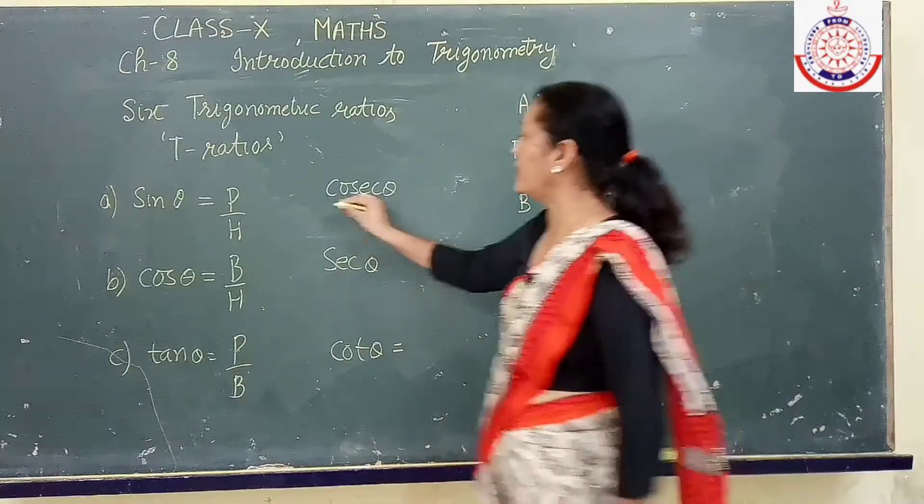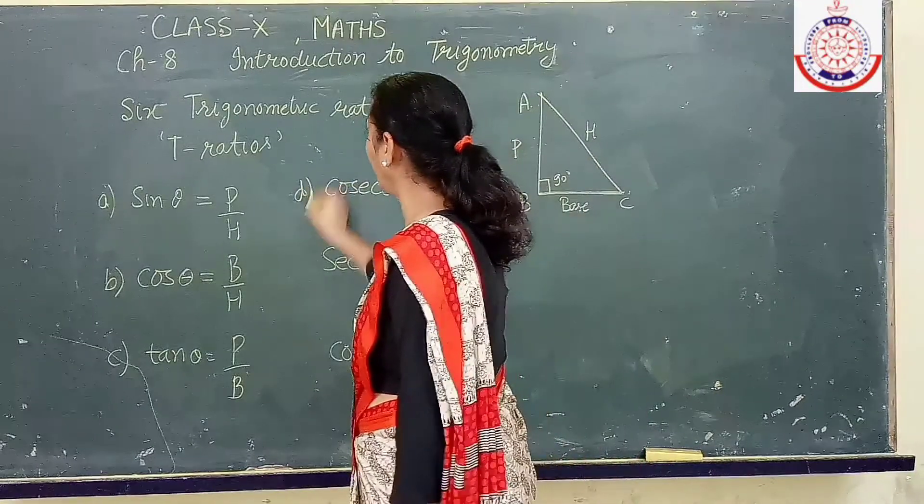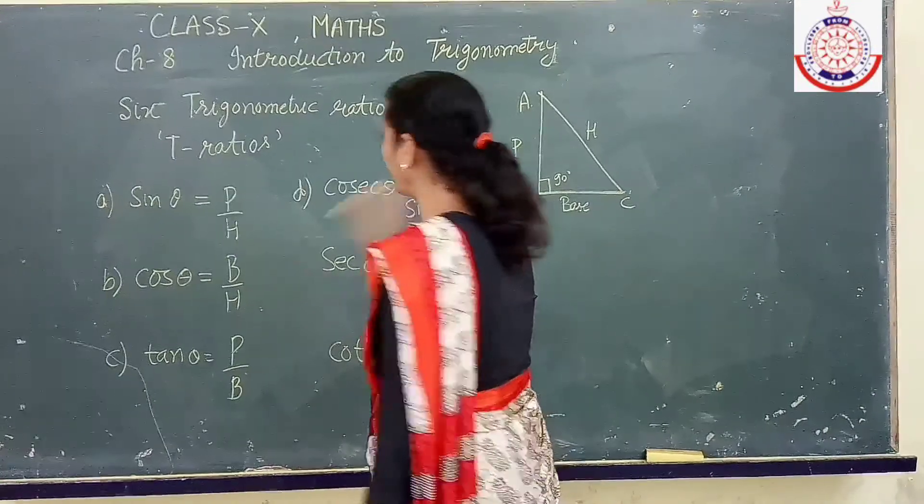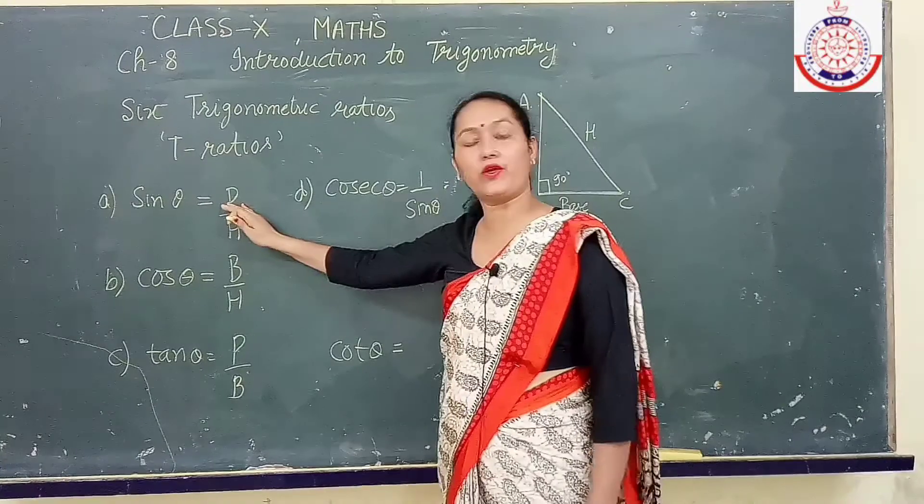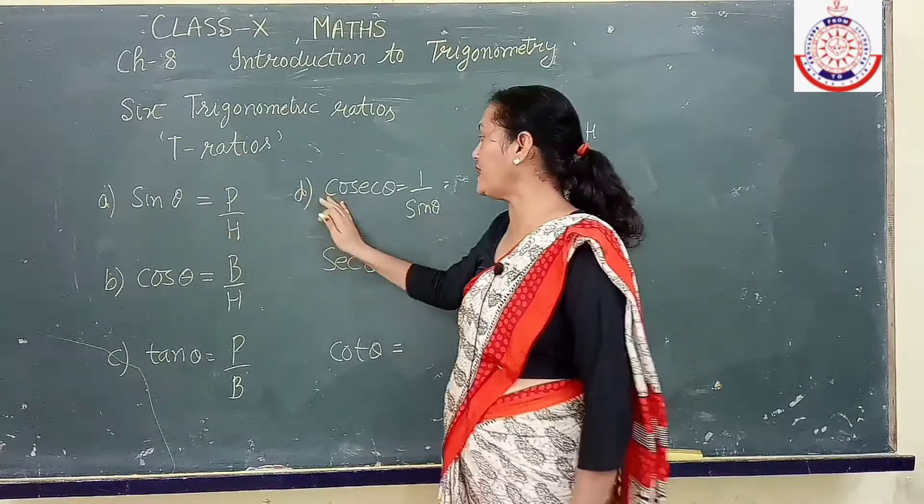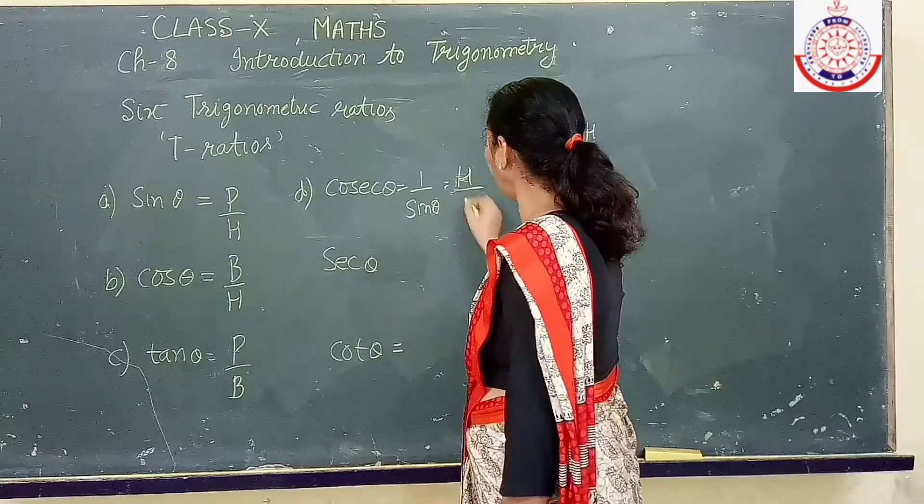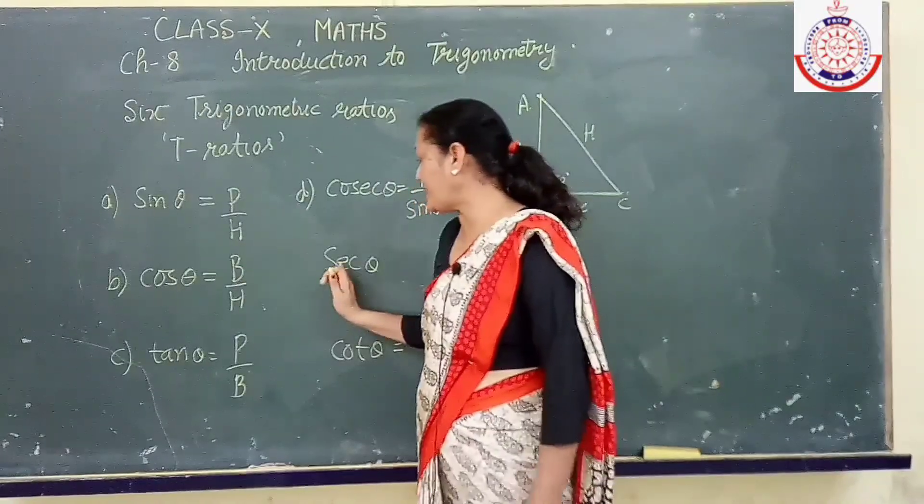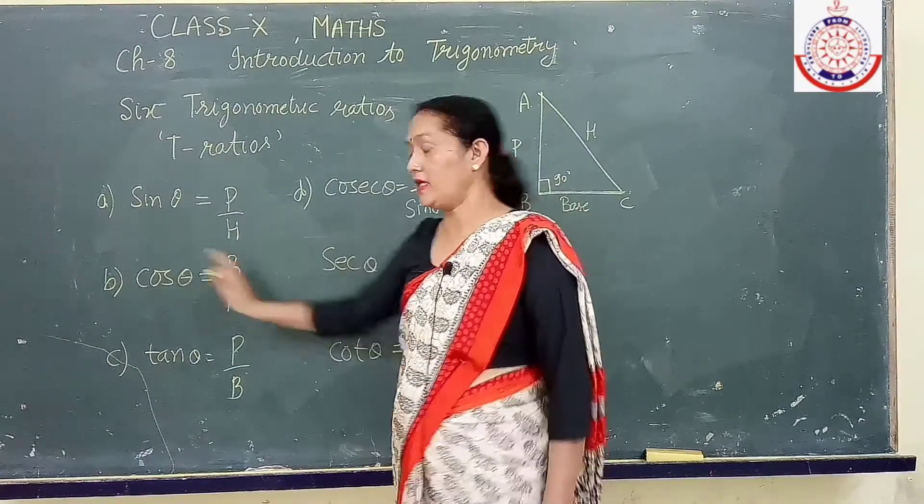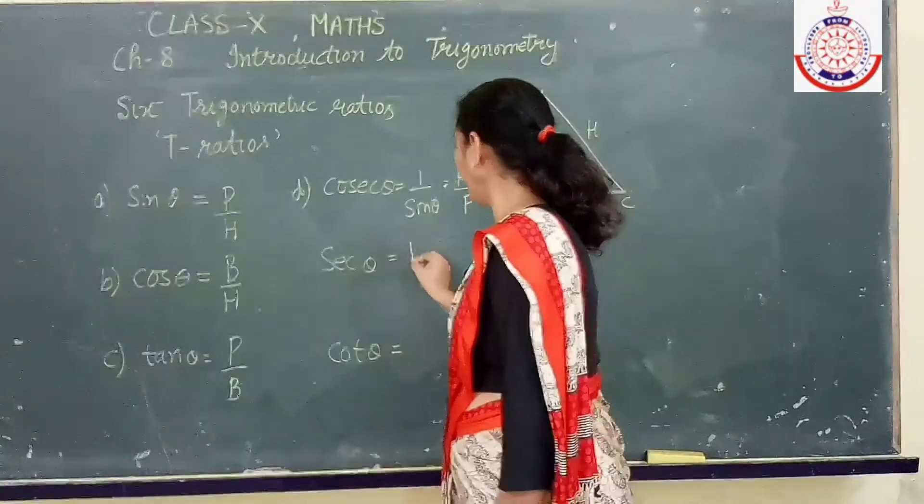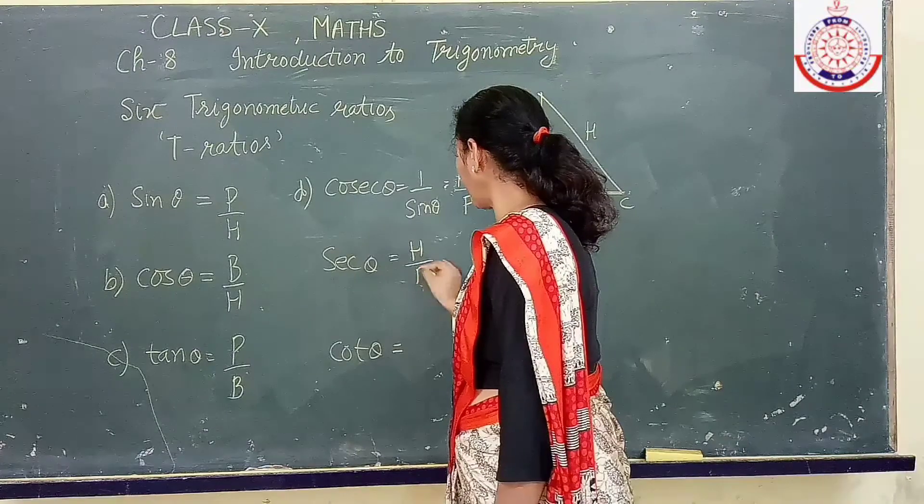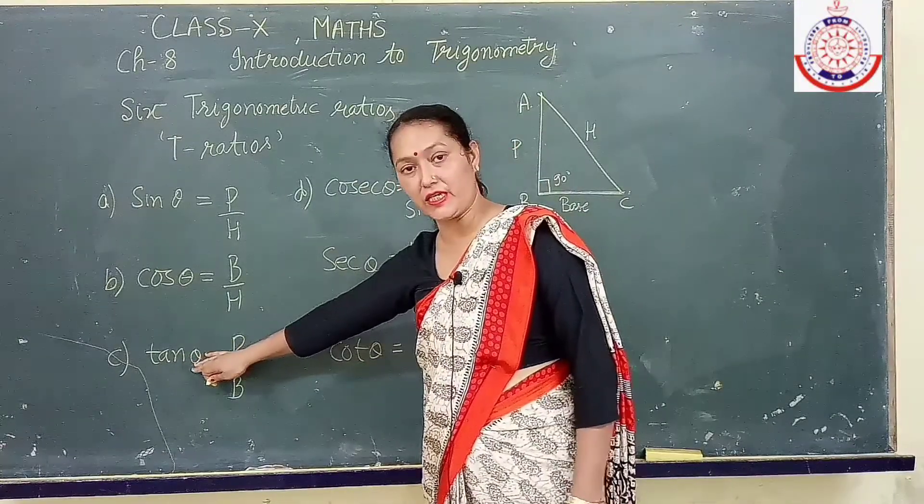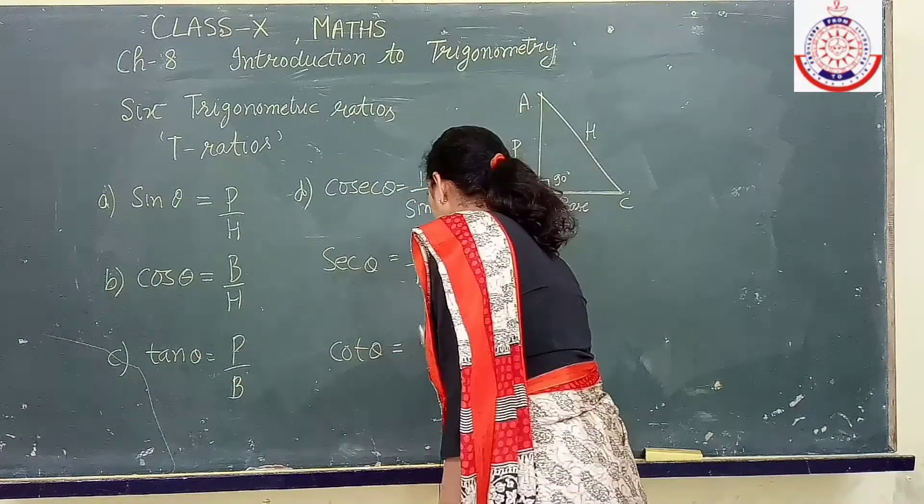Fourth one is cosecant theta. Cosecant theta is reciprocal of sin theta. So if sin theta is perpendicular over hypotenuse, cosecant theta will be hypotenuse upon perpendicular. Next is secant theta. Secant theta is reciprocal of cos theta. So here we get value hypotenuse upon base. Cot theta is reciprocal of tangent theta. So we will write base upon perpendicular.